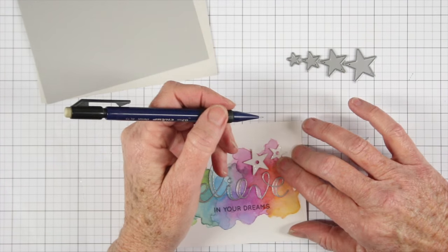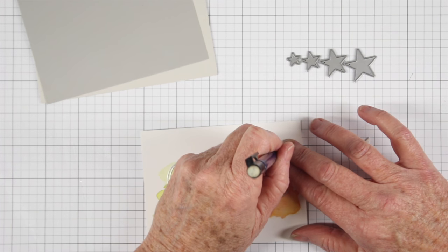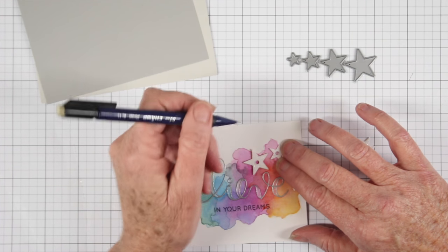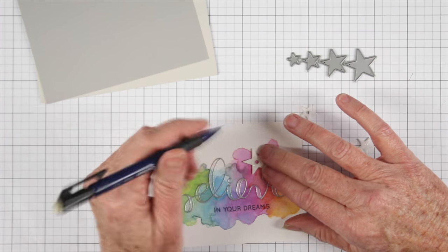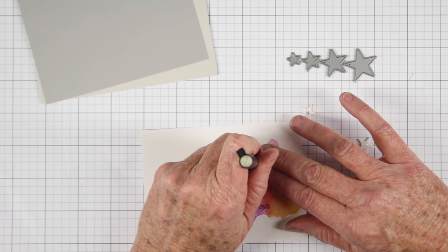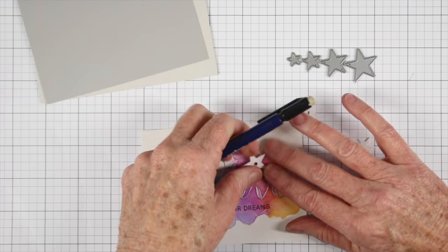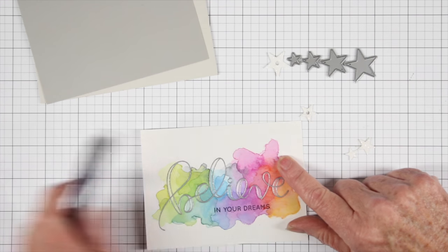So first I want to place my stars down where I want them on my card front and I'm just using a pencil here and drawing a little circle. This will allow me to use my Japanese screw punch and add some holes.